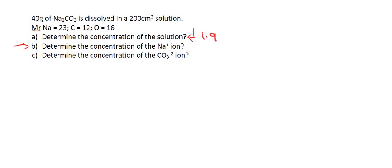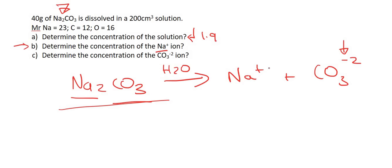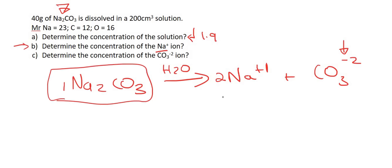Moving on to part B — determine the concentration of the sodium ion. Some students get confused here. When sodium carbonate is put in water, it breaks up into sodium ions and carbonate ions. Carbonate has a charge of minus 2, and sodium has a valency of plus 1 (group 1). Balancing the equation requires a coefficient of 2 for sodium, meaning for every one Na₂CO₃, you form 2 sodium ions.